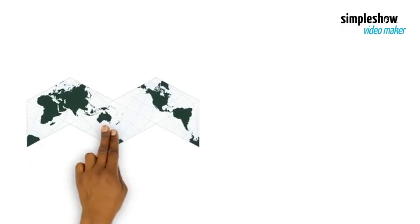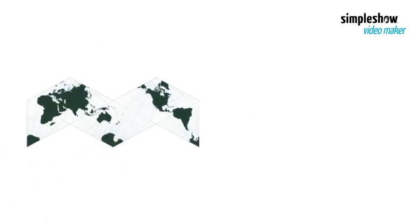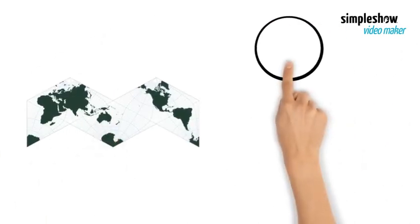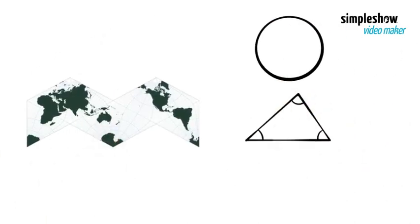Number 3. Projection: no map can preserve areas, angled shapes, and distance at the same time, so you have to choose in which element to lie.